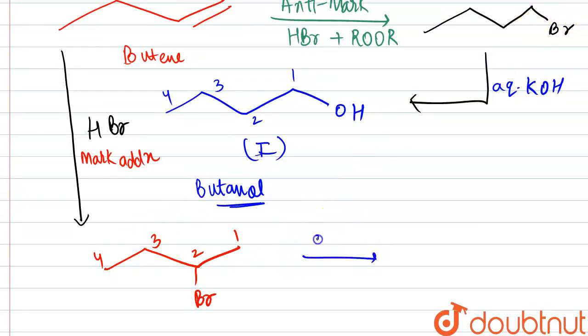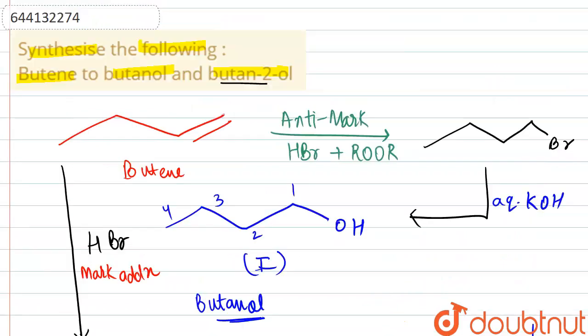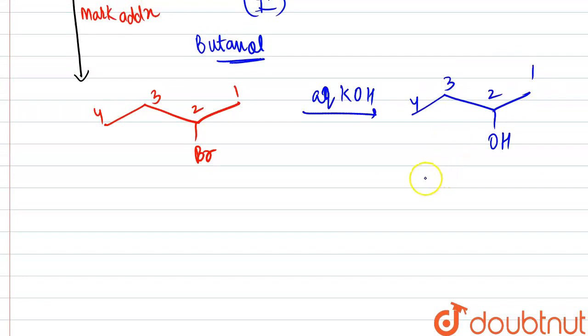Now we are treating it with aqueous potassium hydroxide. So this will be leading to the formation of OH group: one, two, three, four. So this is butane, and at second position OH is there, so butane-2-ol is formed.